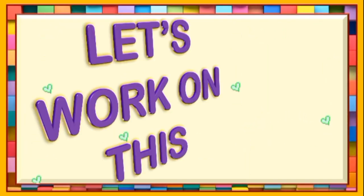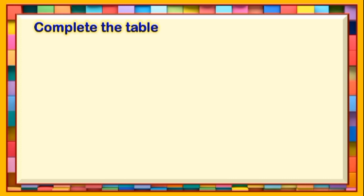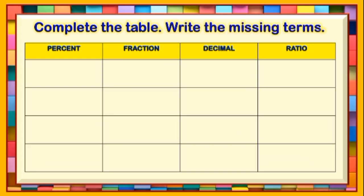Let us apply what we have learned by doing the practice exercise. Are you ready? Let us go! Direction: Complete the table. Write the missing terms. You will be given a few seconds to answer each number. If you need more time, you may pause this video and click once more when you are done answering. Are you ready? Let us proceed. The first given number is 84%. Look for the equivalent fraction, decimal, and ratio. Go!